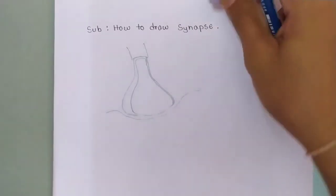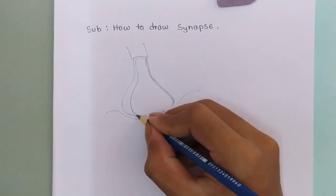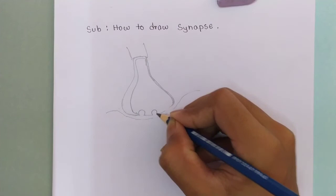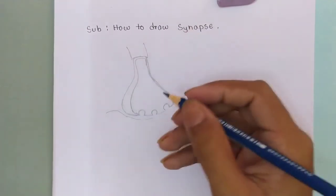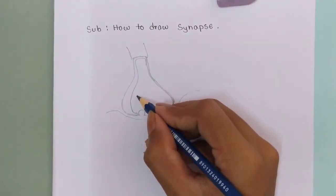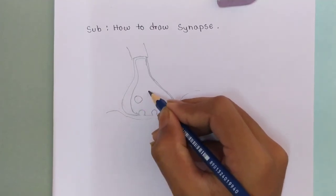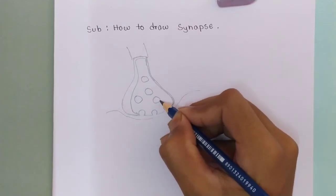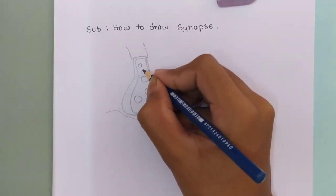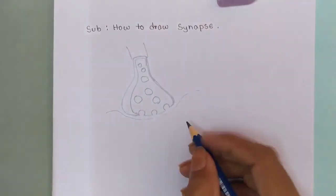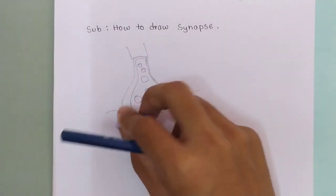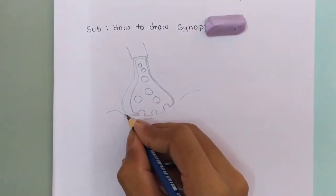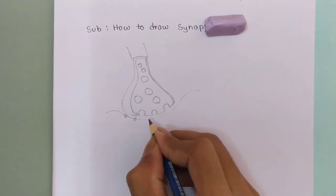And guys we will make some clefts here in this way, some gaps, okay. And we will make some circles inside the axon and then we will erase some parts from here and we will make something like this.